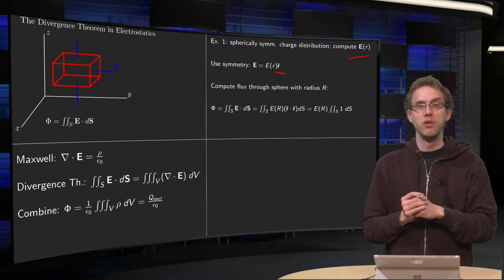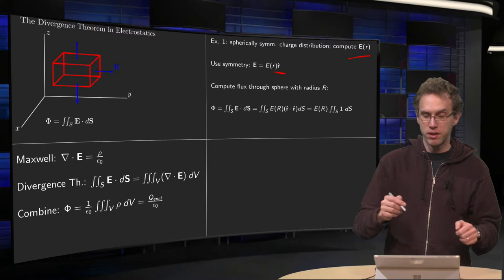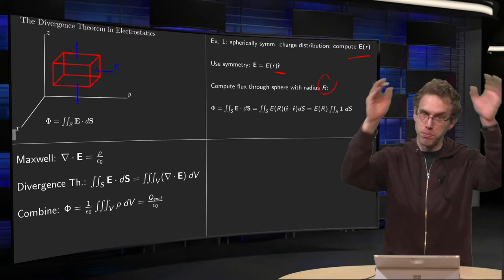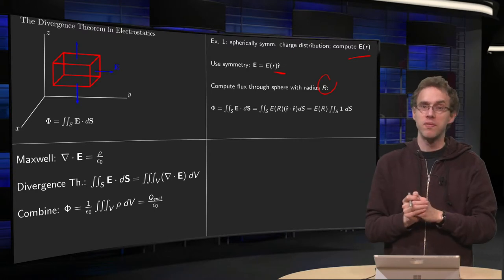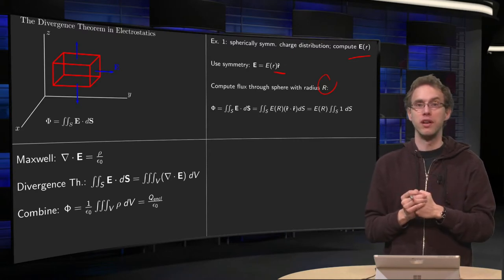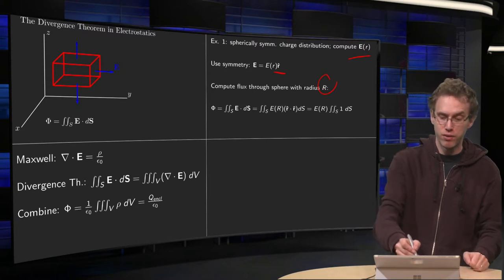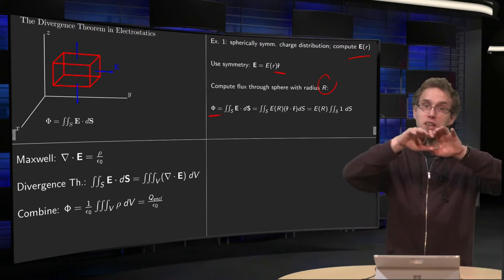Now what are we going to do? We are going to use some sphere with radius capital R, some bigger sphere, which encloses all charge inside. And now we are going to compute the electric flux phi through this sphere with radius capital R.